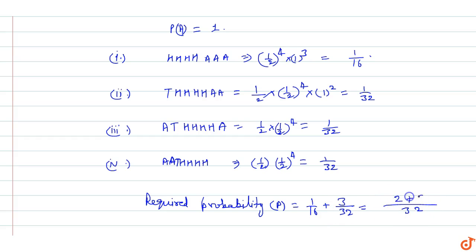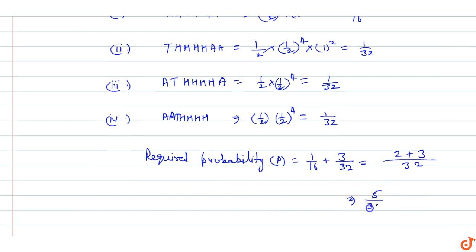Which is equal to 5 upon 32. So probability P equals 5 by 32.